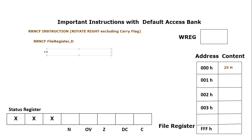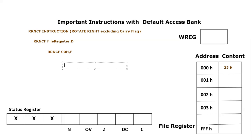Let's take an example to further explore the RRNCF instruction. We are interested to rotate right the 0x00 hex file, and the destination is 1, which means we want to save the result in the same file register, which is 0x00. The content of the 0x00 file register is 0x25, as you can see.